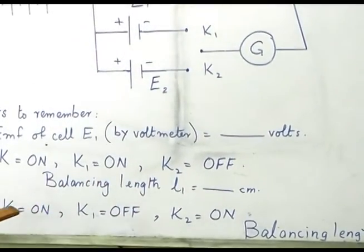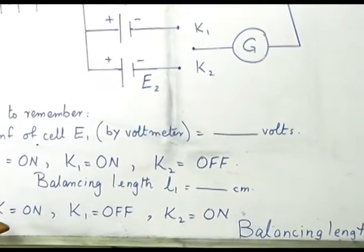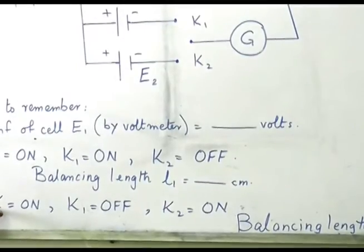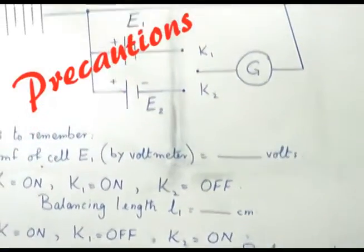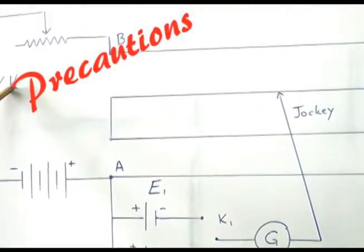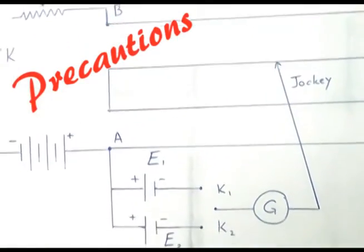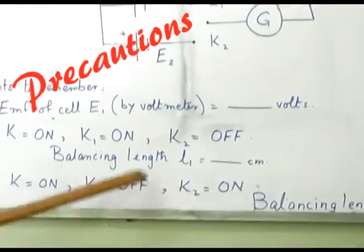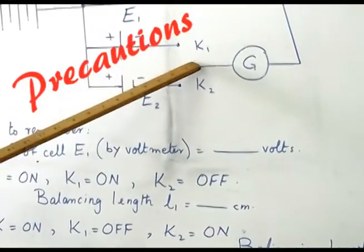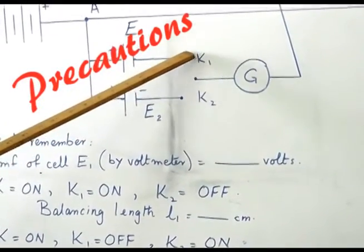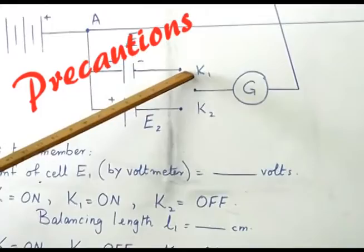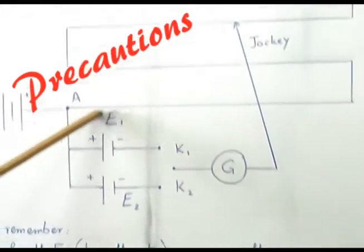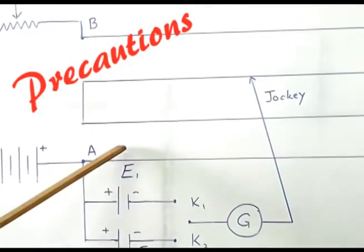Then, for the second line, when we have to find L2, this K, which is the plug key, this should be on. K1, it should be off. This means that we have to open this key. By opening it, it means that this cell E1, it is out of the circuit.